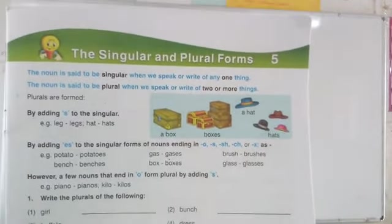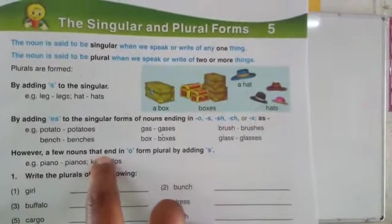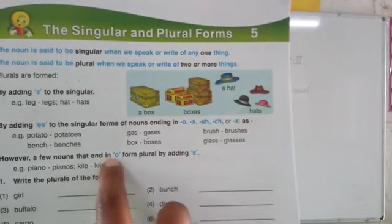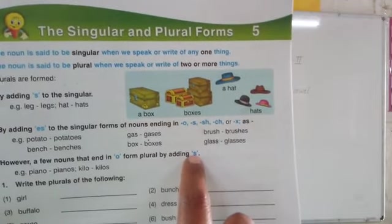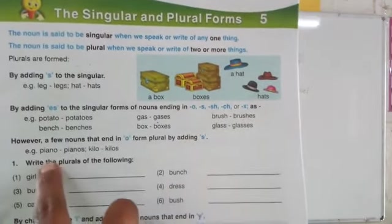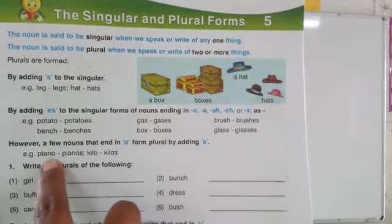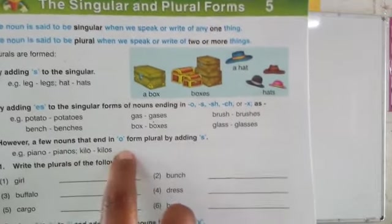However, a few nouns that end in 'O' form the plural by adding just 'S'. For example: piano → pianos, kilo → kilos.